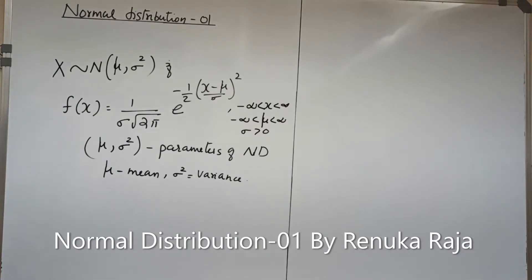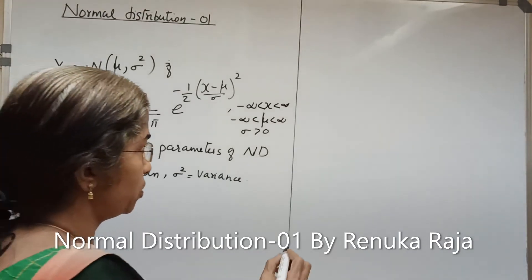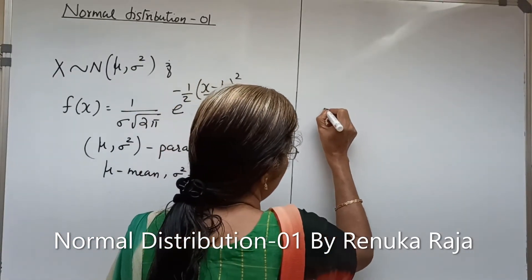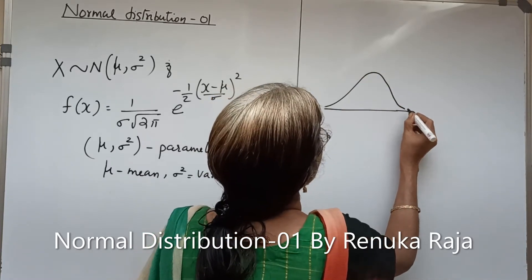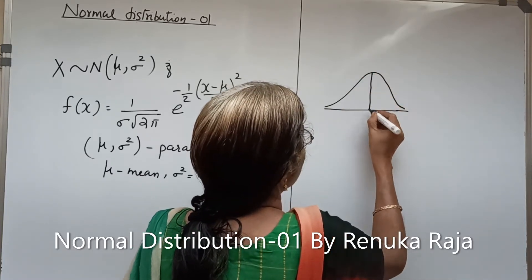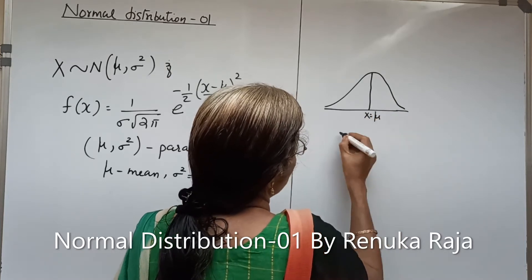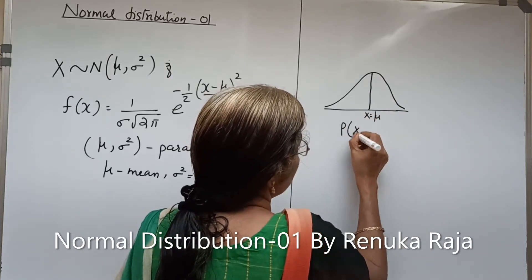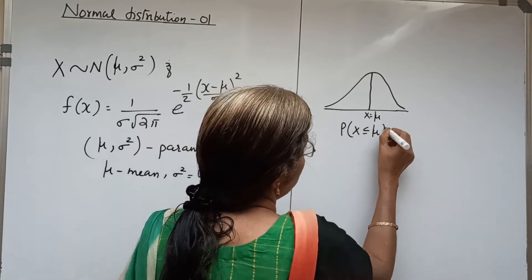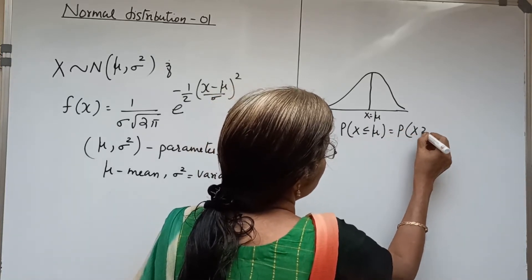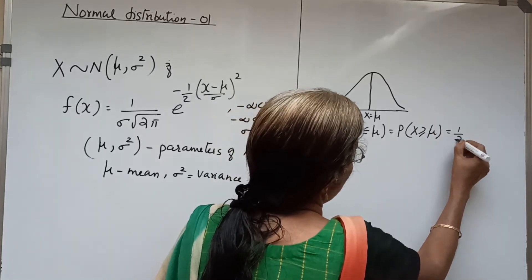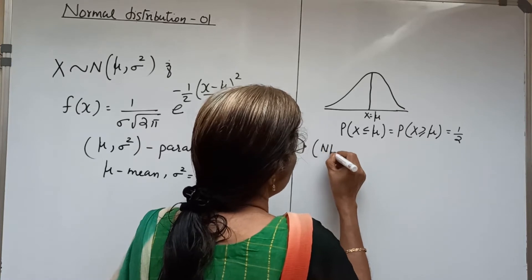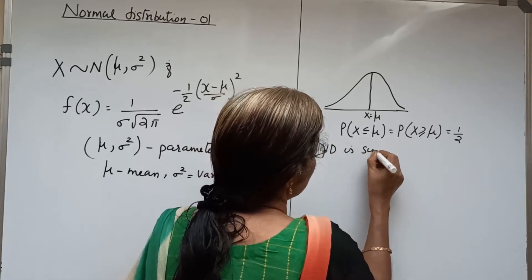An important property of normal distribution is that it is symmetric at x equal to mu. The normal curve is symmetric at x equal to mu, so that the probability x less than or equal to mu equals the probability x greater than or equal to mu, equal to 1 by 2. So normal distribution is symmetric at x equal to mu.